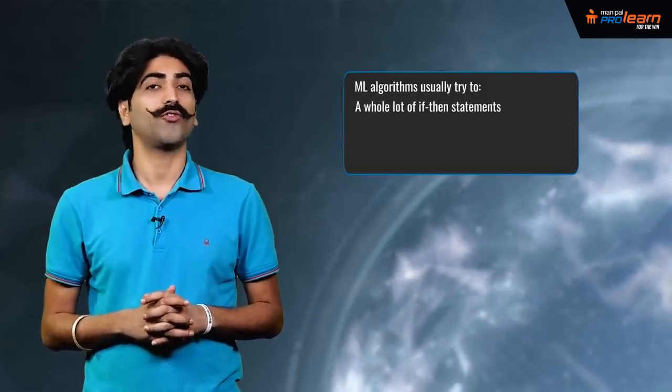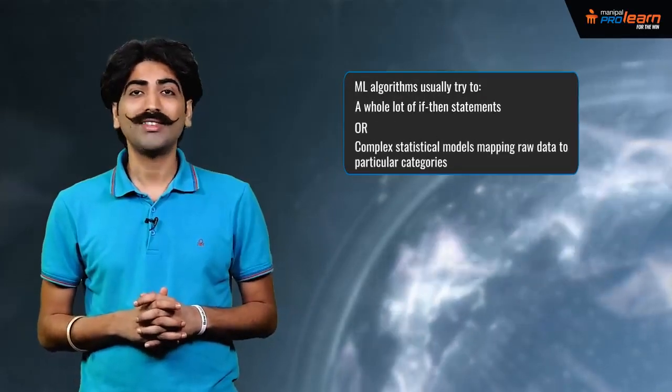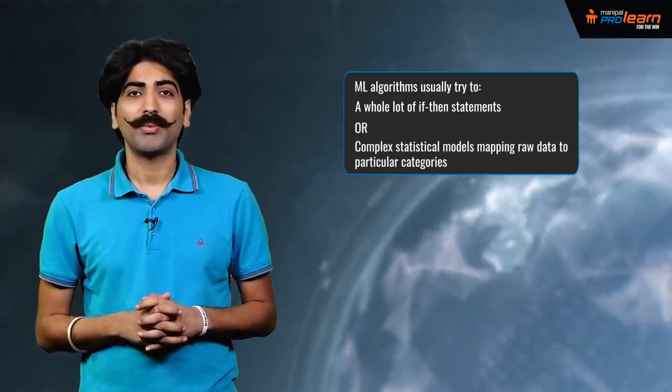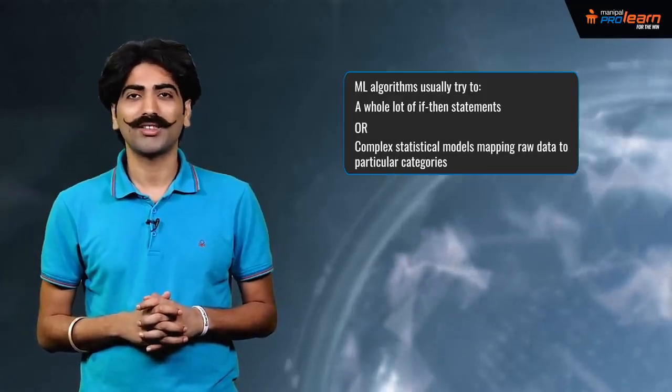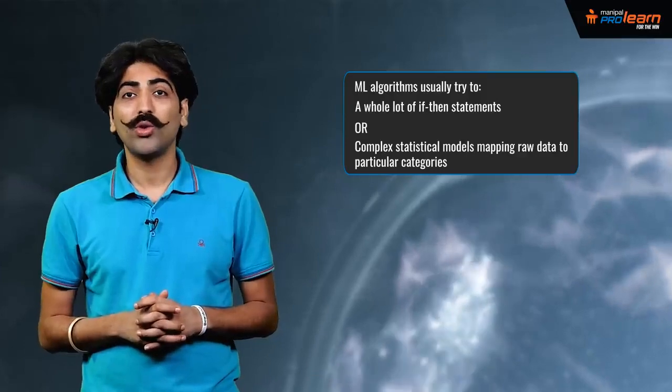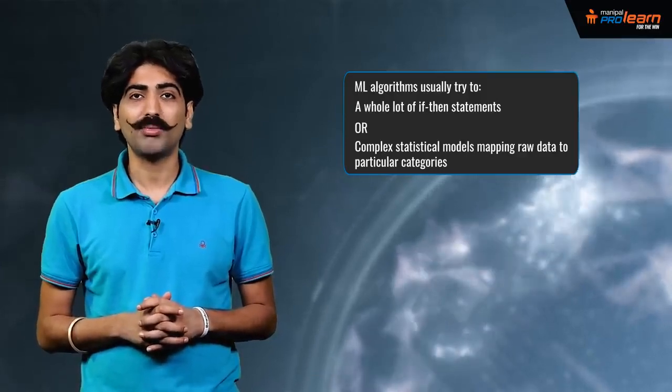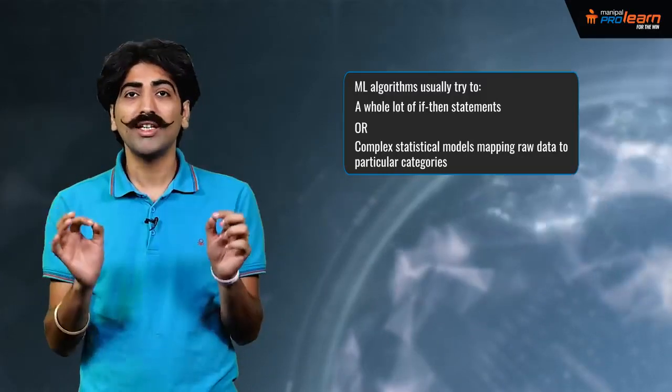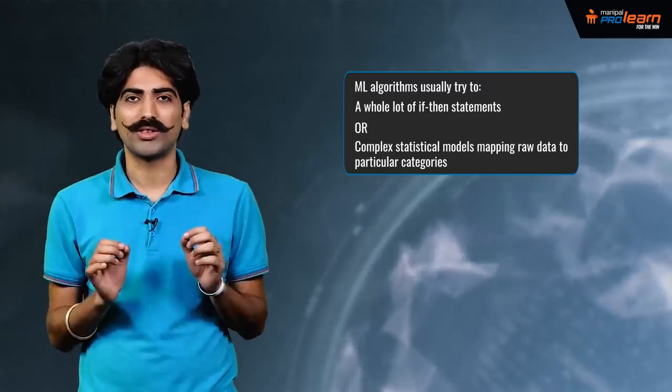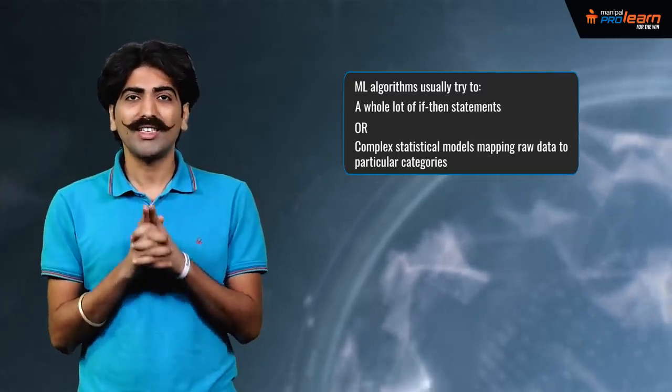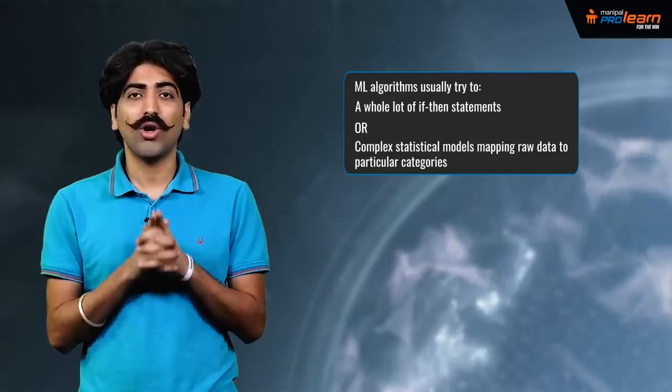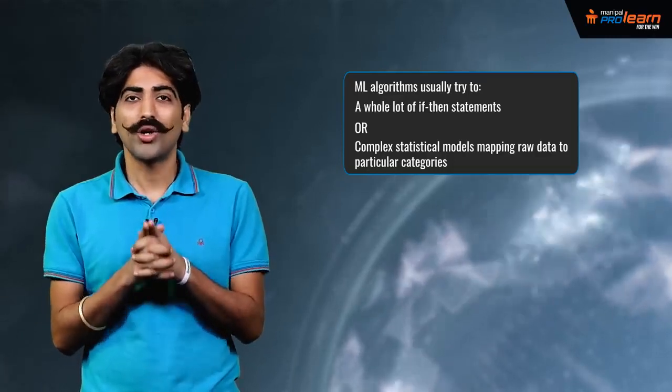To further demystify AI, let me tell you that AI can be a whole lot of if-then statements or complex statistical models mapping raw data to particular labels. Here, the key point to note is that these if-then statements are simply rules explicitly programmed by humans. And put together, these if-then statements are sometimes also known as rule engines or expert systems.